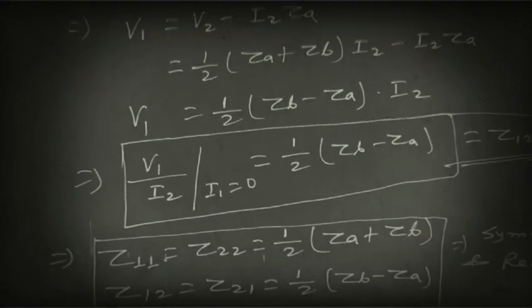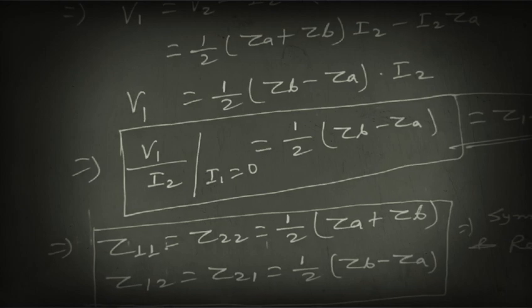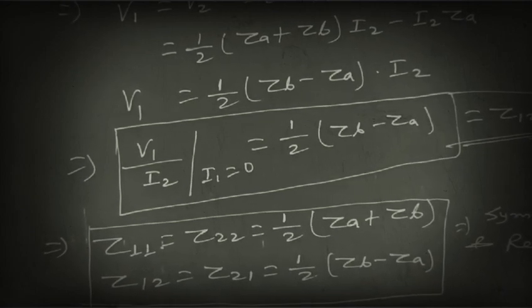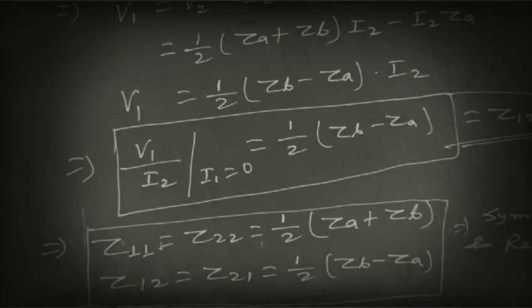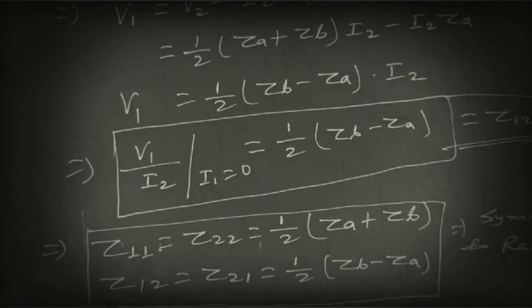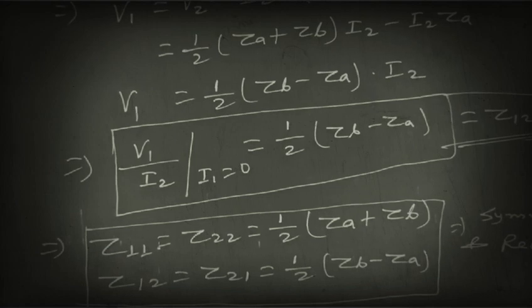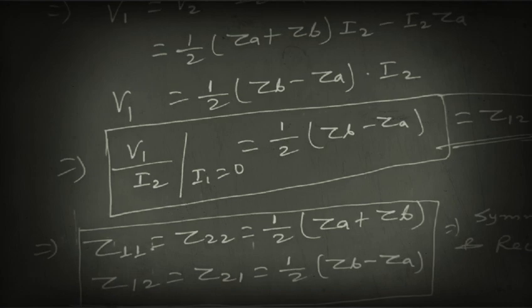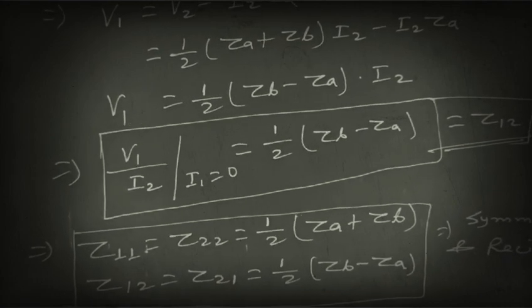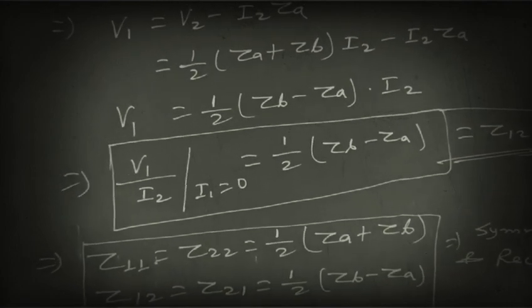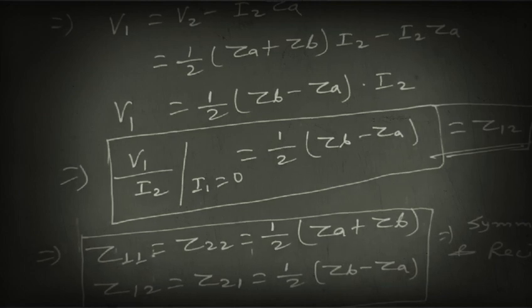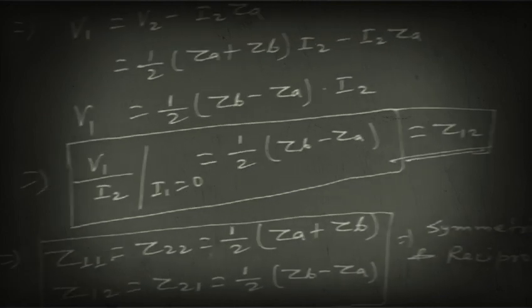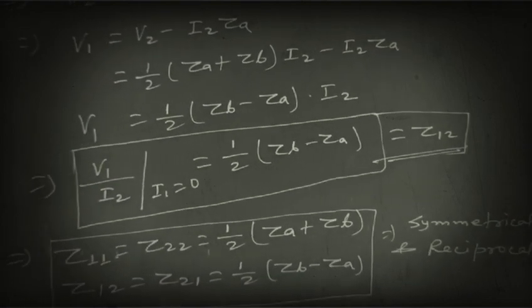So we have all four Z parameter values. Z11 equals Z22 equals (1/2)·(ZA + ZB), which means the lattice network is symmetrical. Z12 equals Z21 equals (1/2)·(ZB minus ZA), which confirms the network is reciprocal. Therefore, the lattice network we analyzed is both symmetrical and reciprocal, and we can solve many numerical problems based on this concept.